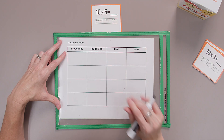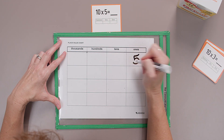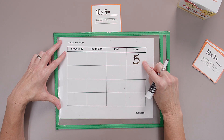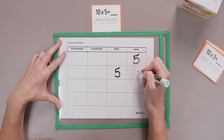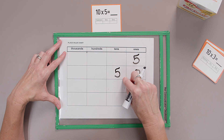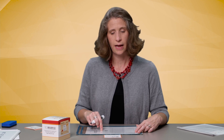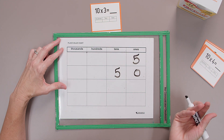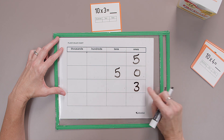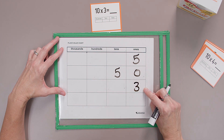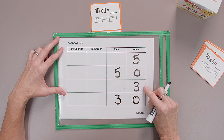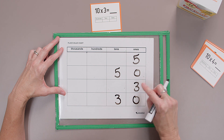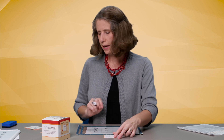Let's think about 10 times 5. I'll put 5 here in the ones place, multiply by 10 — that's 50. What happened with the 5? It went from the ones place to the tens place. 50 is 10 times greater than 5. How about 10 times 3? I'll make my 3 down in the ones place. Times 10 is 30. That 3 moved from the ones place to the tens place. Excellent — that's multiplication by tens.